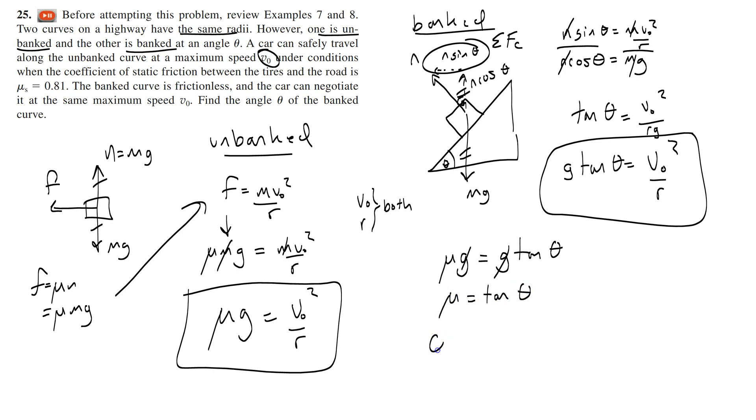So to find the angle you just take the inverse tangent of mu which in this case is inverse tangent of 0.81 and that will give you 39 degrees. So that was a pretty tough problem. You had to write these two separate equations and set them equal to each other which is not so obvious. You kind of have to do some playing with that.